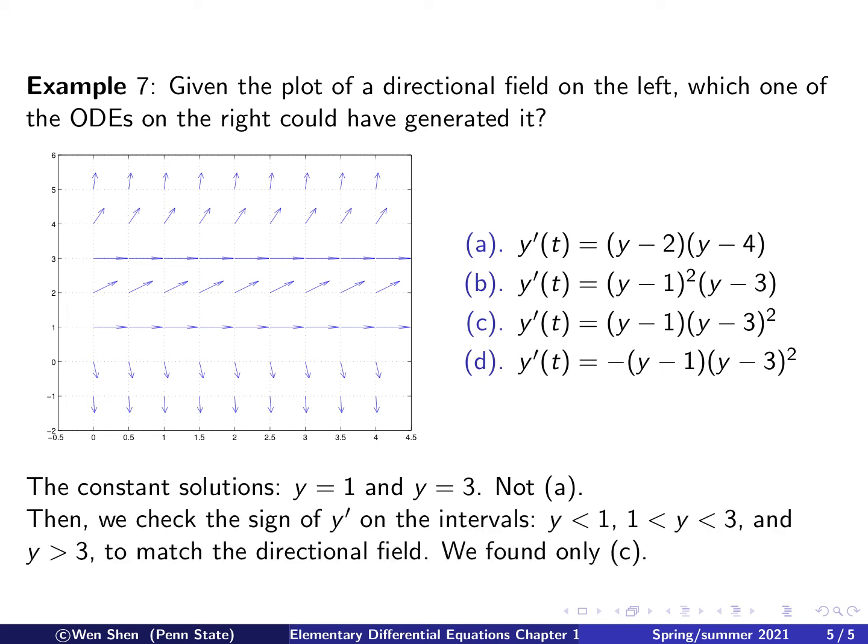And then we can simply check the sign of y prime on the three intervals: y less than 1 down here, y between 1 and 3 in the middle here, and y bigger than 3 to see which of these three equations would match. For example, when y is less than 1, it's negative. Then let's look at (d). This term is positive. y less than 1, this term is negative. Times a negative, it gives you a positive sign. So (d) is no good.